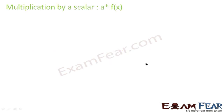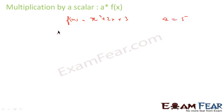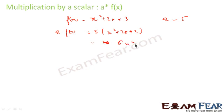When you multiply a scalar with a function: if f(x) = x² + 2x + 3 and a = 5, then a × f(x) = 5 × (x² + 2x + 3) = 5x² + 10x + 15.